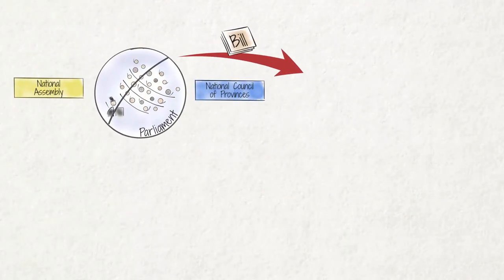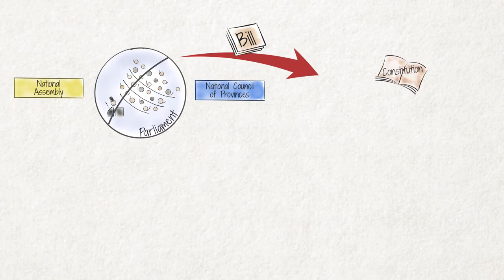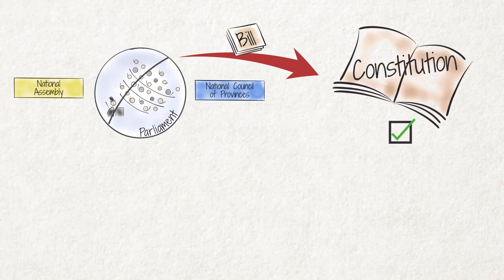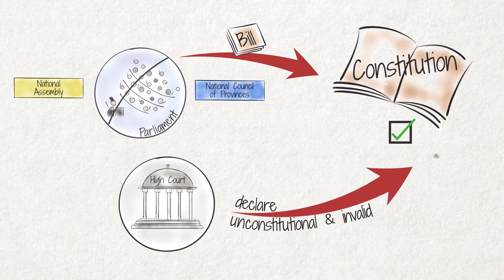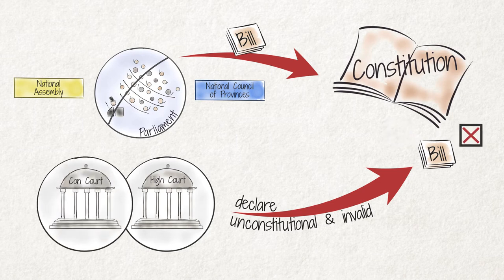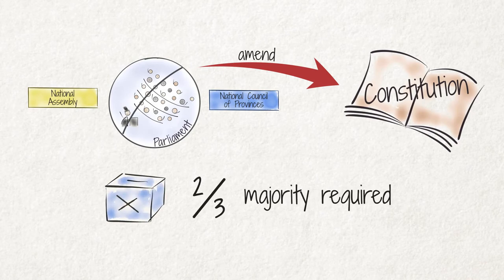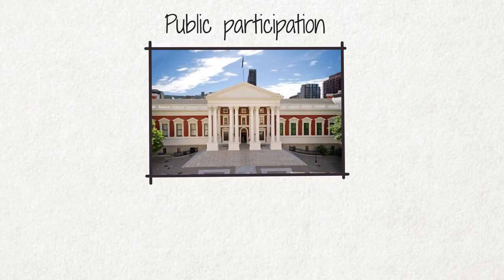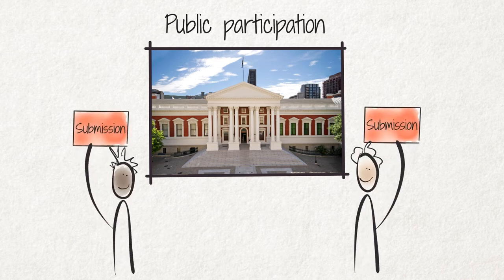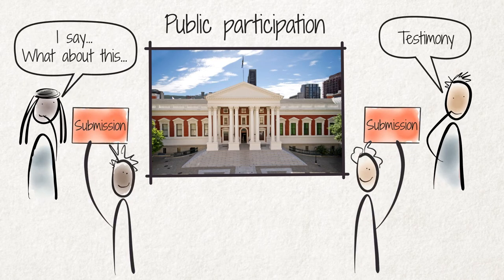Parliament must ensure that all bills conform to the provisions of the constitution before being passed. Otherwise, a high court can declare the law or parts of it unconstitutional and invalid. If this is confirmed by the constitutional court, the law has no force or effect, as if it was never passed. Parliament may also amend the constitution with a two-thirds majority of votes. Furthermore, the constitution requires parliament to allow members of the public to participate in law-making processes, through written submissions or by giving testimony before parliamentary committees.